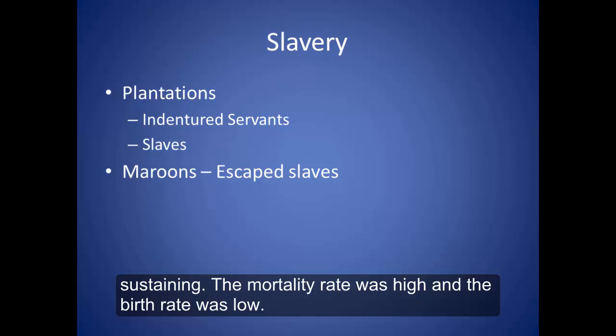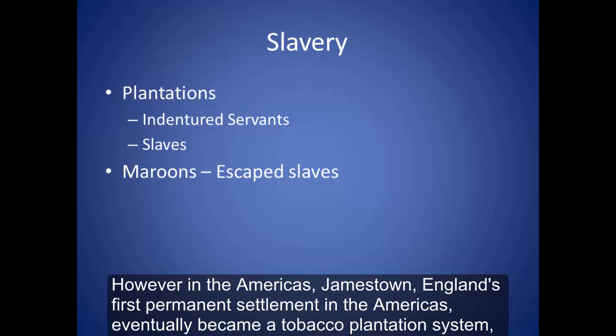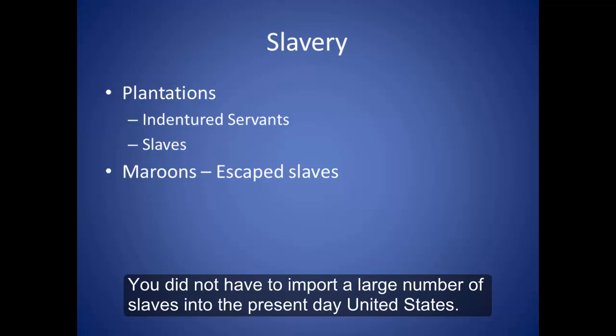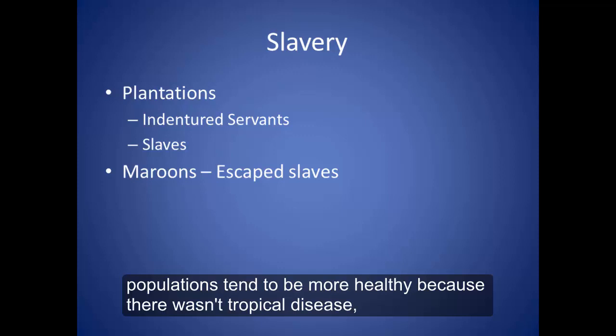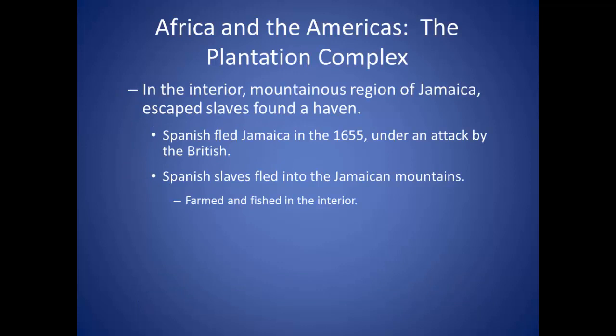However, in the Americas, Jamestown — England's first permanent settlement in the Americas — eventually became a tobacco plantation system. While the coastal areas of the Carolinas grew rice, you did not have to import a large number of slaves into the present-day United States. The populations tended to be more healthy because there wasn't tropical disease, and they could raise their own families.